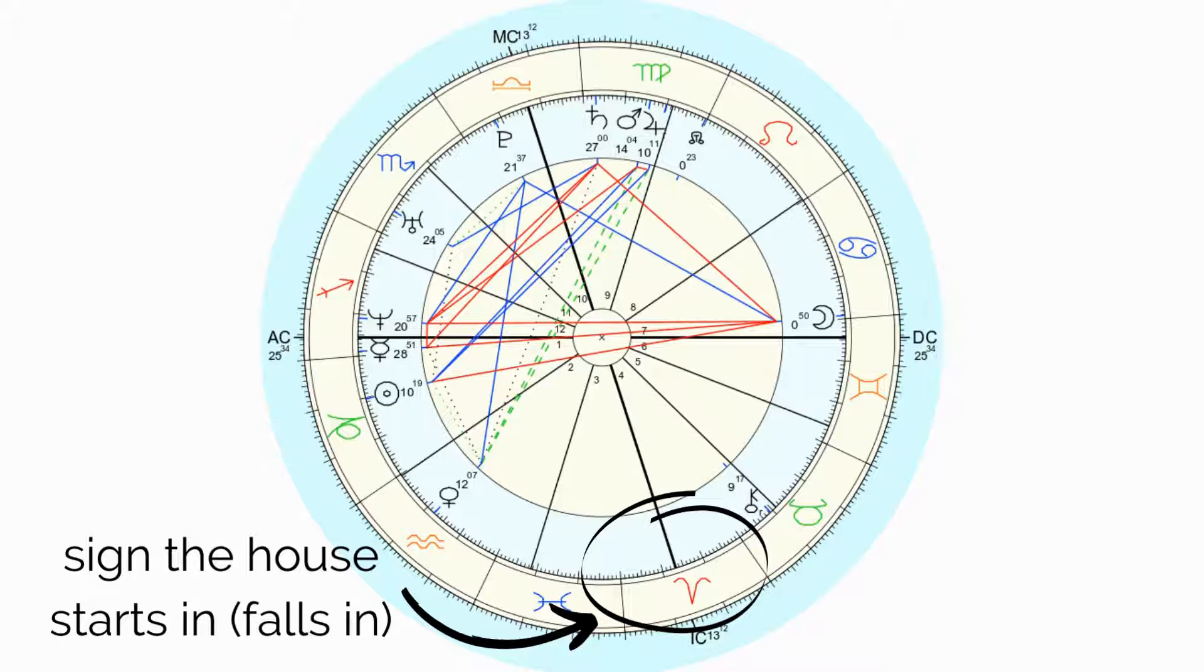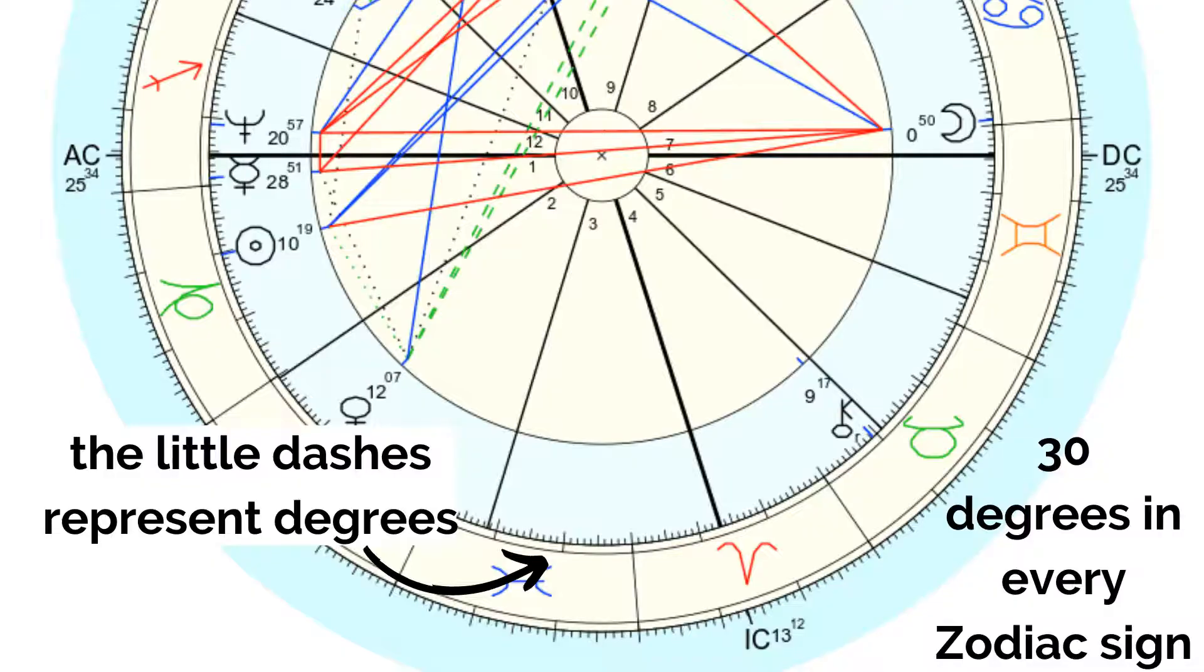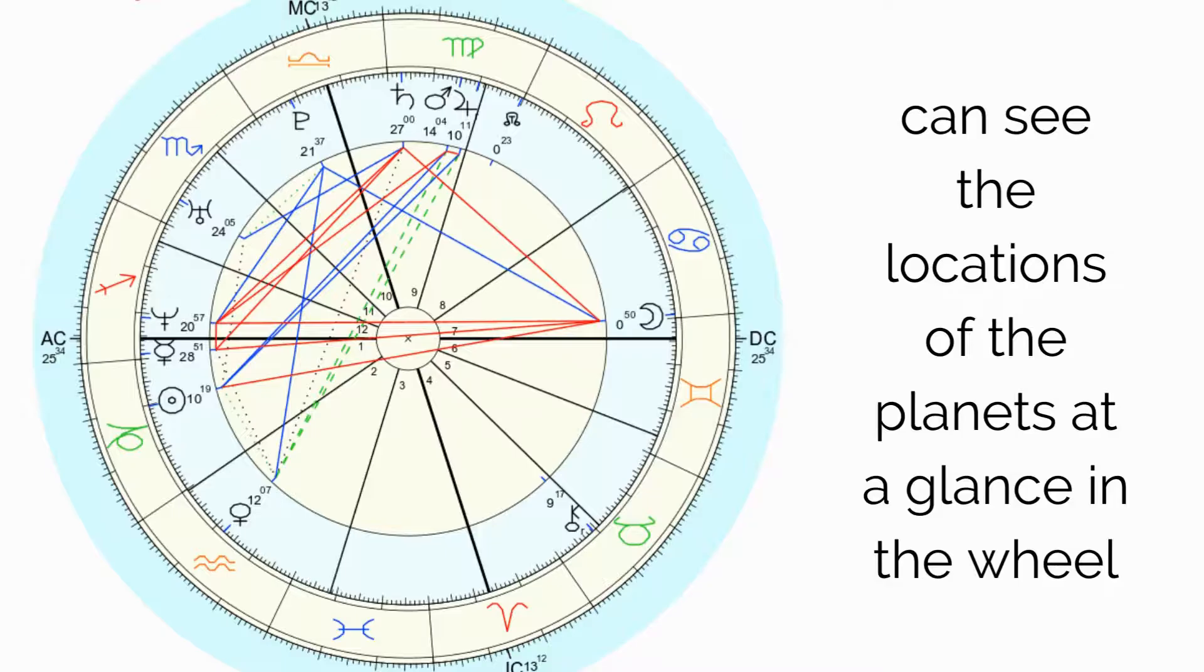The zodiac sign the line leads to is the zodiac sign the house begins in and is considered the zodiac sign that house falls in. There are dashes all along the circle with the zodiac signs. These dashes represent degrees. Every zodiac sign is made up of 30 degrees, and there are 360 degrees in the zodiac in total. The planets are placed in the wheel where they are located. You can see at a glance their zodiac sign and house location.